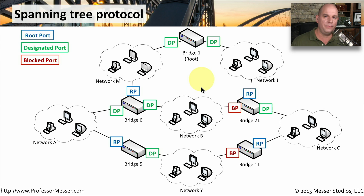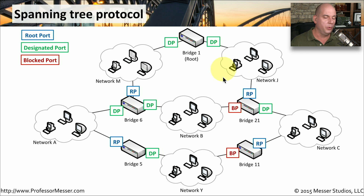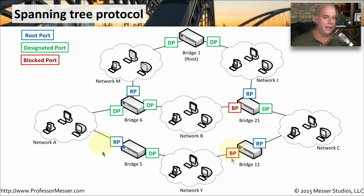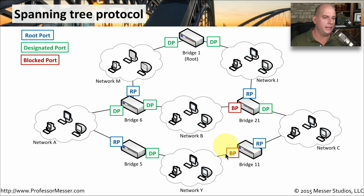There are three different kinds of interfaces. We have designated ports — these are ports that are used to send traffic over the network. We have root ports — these are the interfaces that are closest to the root. When you look at each bridge, you can see each bridge is going to have a root port associated with it. And we also have blocked ports — these are ports where spanning tree has restricted any traffic from traversing that particular interface.